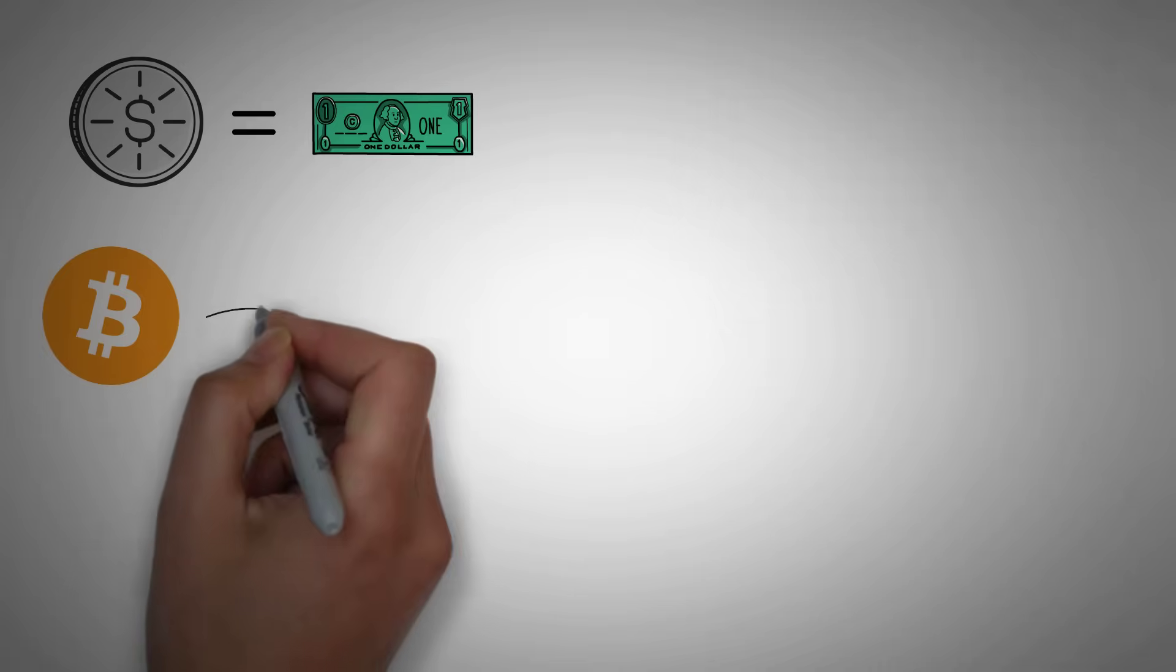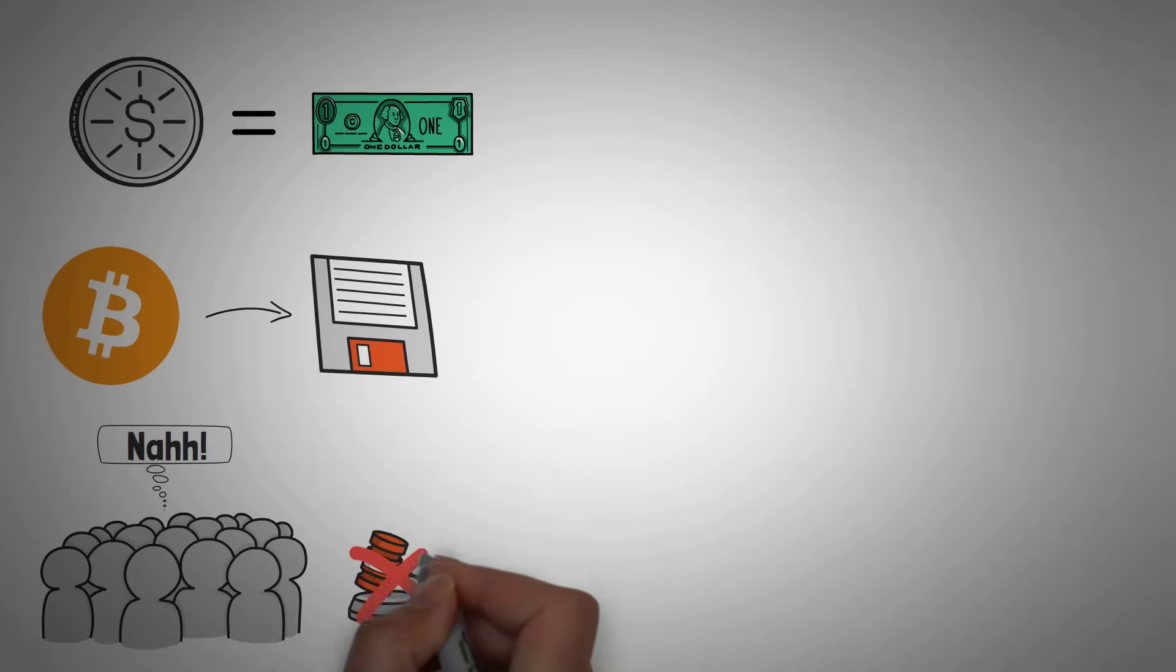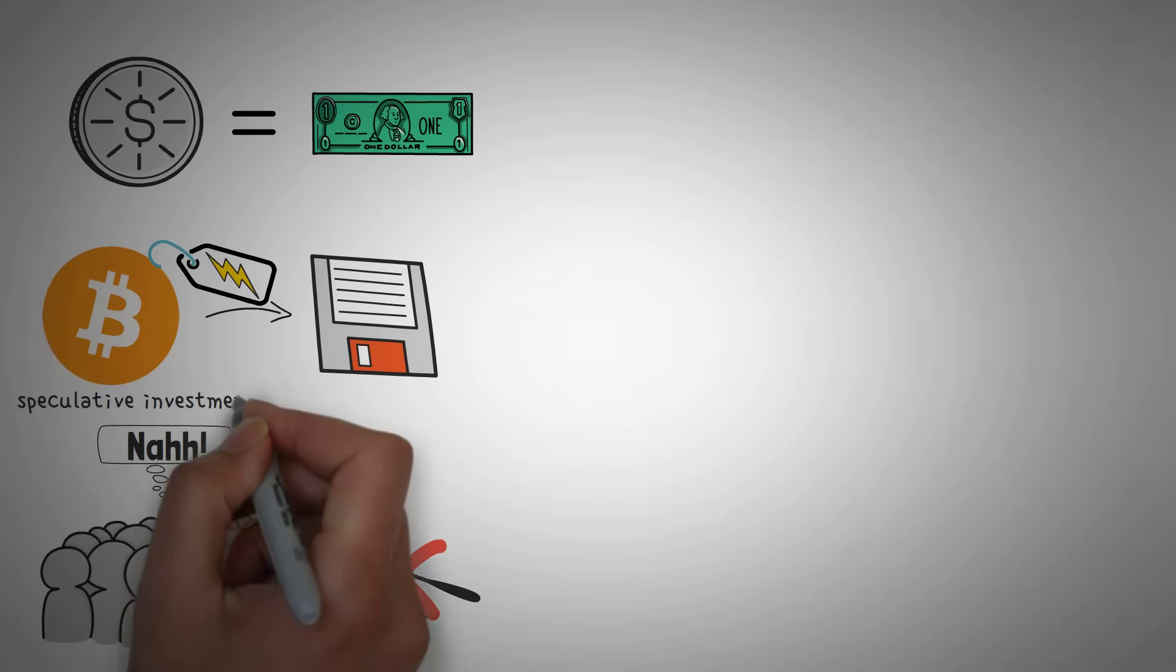Bitcoin, the first cryptocurrency, was actually created to be used as a store of value. However, since it's not widely adopted and there aren't very many regulations on it yet, the price fluctuates a lot. So much so that it is classified as a speculative investment.